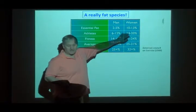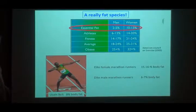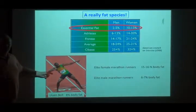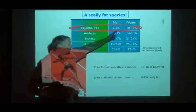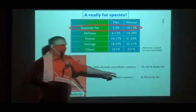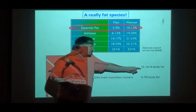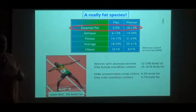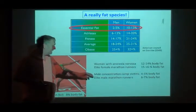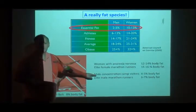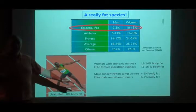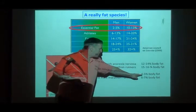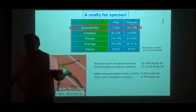The essential fat — the amount you can't do without — is the key thing. Usain Bolt, a great athlete, had about 8% body fat, pushing down toward the essential level. Elite male marathon runners get down to about 6 or 7%, female marathon runners 15 to 16%. Even people on the verge of death from starvation — women with severe anorexia and men from concentration camps — get down to 4.5% or 12 to 14% before they die.